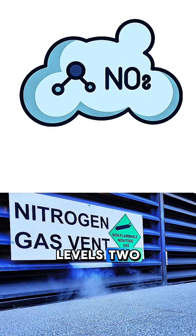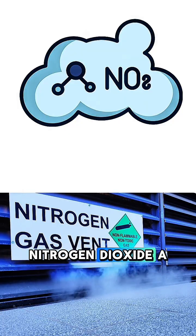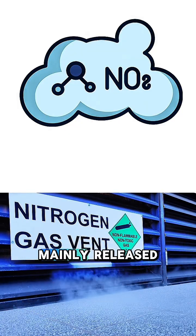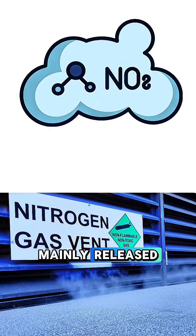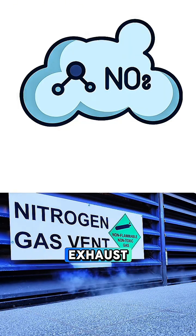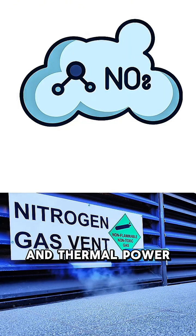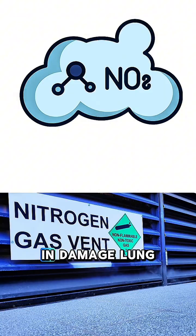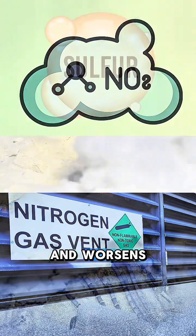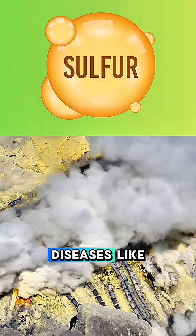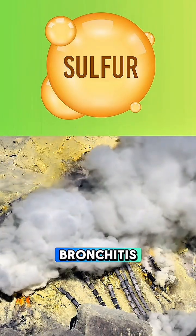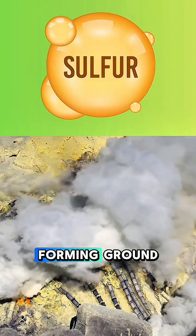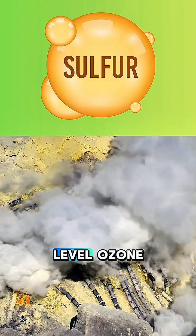Second, nitrogen dioxide: a reddish, irritant gas mainly released from vehicle exhaust and thermal power plants. When breathed in, it also plays a role in forming ground-level ozone, and can even cause fatal poisoning at high exposure levels.